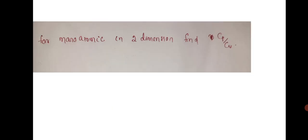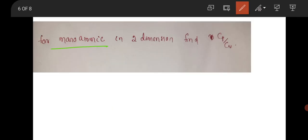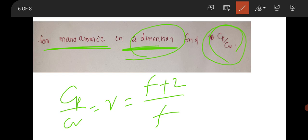Next question was from thermodynamics, very interesting and tricky also. The question was for monoatomic in two dimensions. What will be the value of Cp/Cv? Cp/Cv equals gamma, which equals (f+2)/f, where f is the degree of freedom.